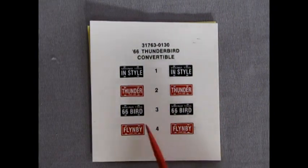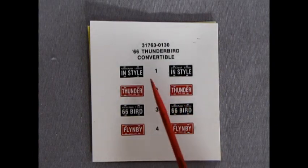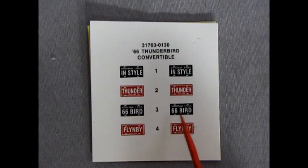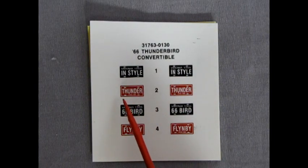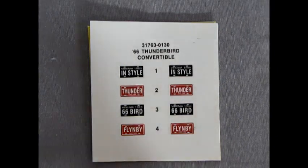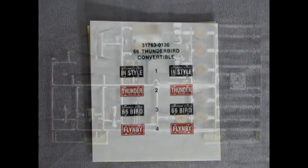And here is our decal sheet for the 66 Thunderbird convertible. We have two plates from Virginia and two from Ohio. For Virginia, we have InStyle and 66 Bird. And for Ohio, we have Thunder and Flying By as the license plates.